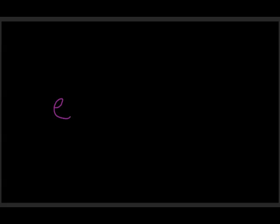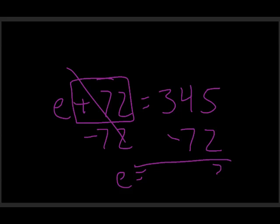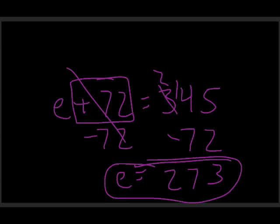One more on your own: e plus 72 equals 345. Pause the video and give it a shot. Since we're adding in the original, subtract 72 from both sides — this cancels out, leaving e. Then 345 minus 72 equals 273, so e equals 273.